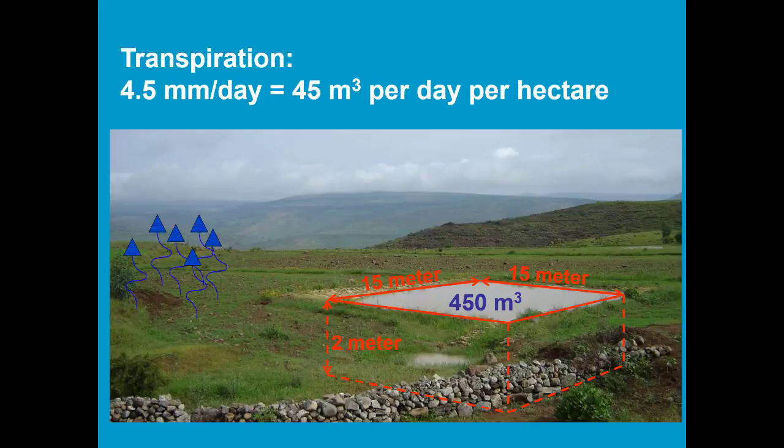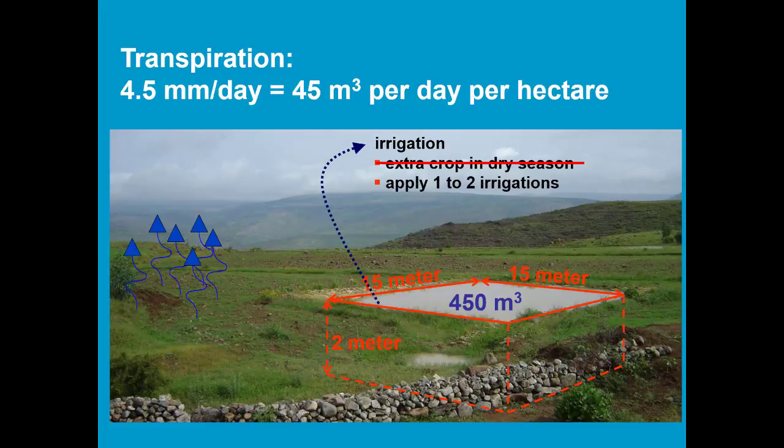The transpiration in the area is about 4.5 mm per day, which means you lose 45 cubic meters per day per hectare. So the amount of water stored in the reservoir is insufficient for the irrigation of an extra crop in the dry season.